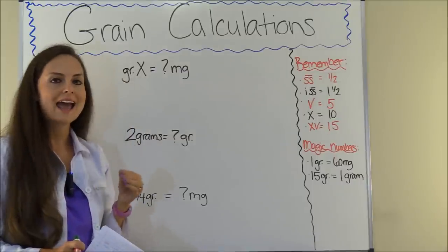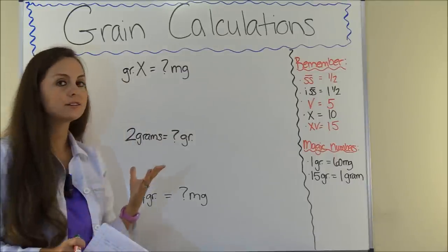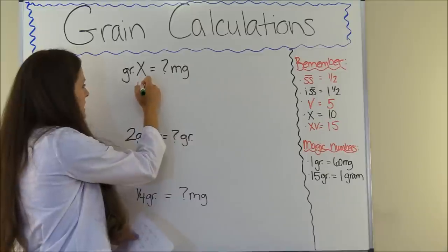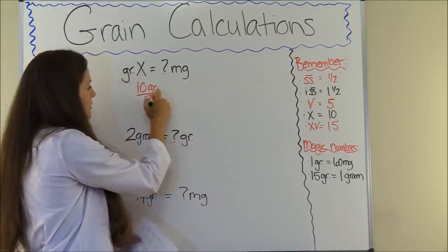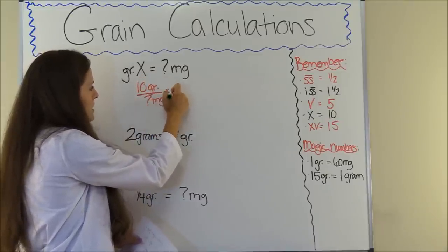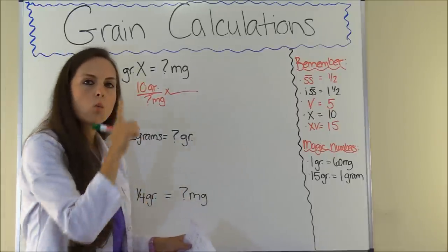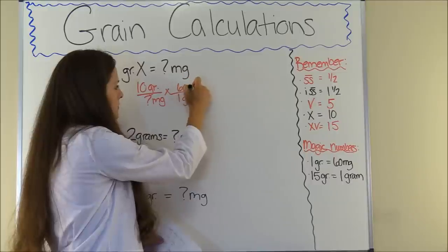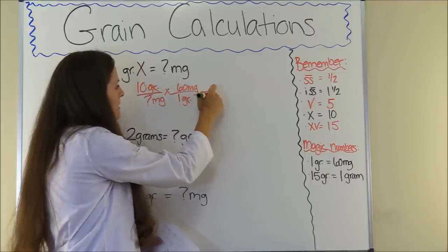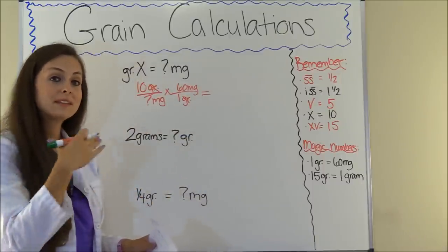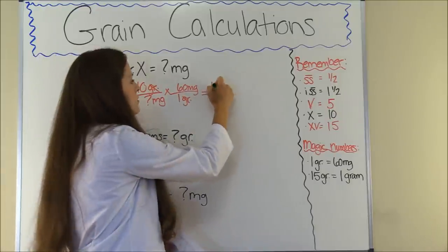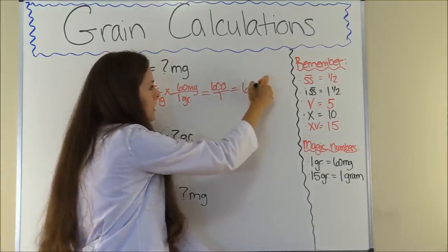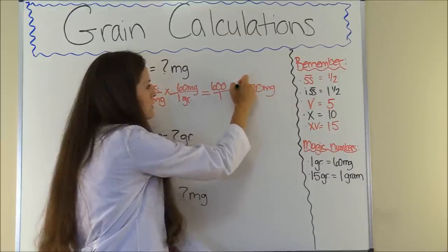This problem says grain X equals how many milligrams? We learned that X is Roman numeral 10, so let's set up using dimensional analysis: 10 grains equals how many milligrams? We know from our magic number that one grain equals 60 milligrams. Grains cancels out, so we multiply: 10 times 60 is 600, divided by 1 is 600. So 10 grains equals 600 milligrams.